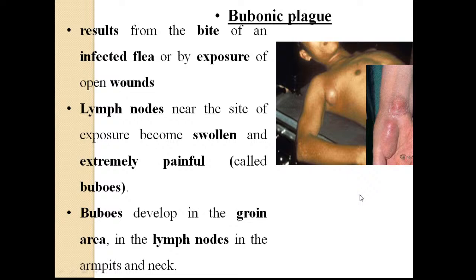Bubonic plague results from bites of infected fleas or from exposure through open wounds when bacteria enter the lymphatic system. It is characterized by buboes — enlarged and extremely painful lymph nodes where bacteria multiply. Buboes develop near the site of exposure, in the groin area, armpits, and neck lymph nodes.